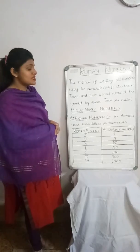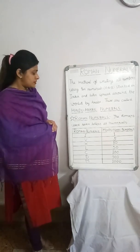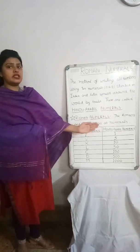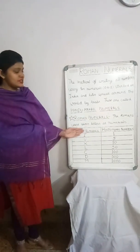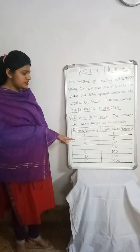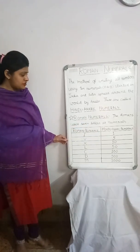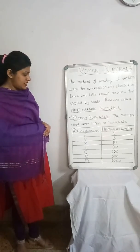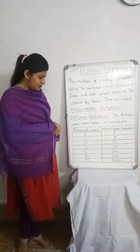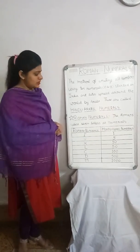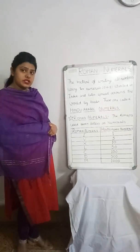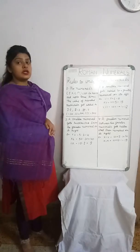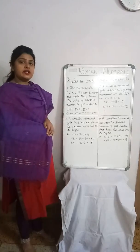The Romans used seven letters as numerals. The numerals and their values are as follows: I represents 1, V represents 5, X represents 10, L represents 50, C represents 100, D represents 500, and M represents 1000. An important thing to note here is that 0 is not represented in Roman numerals.